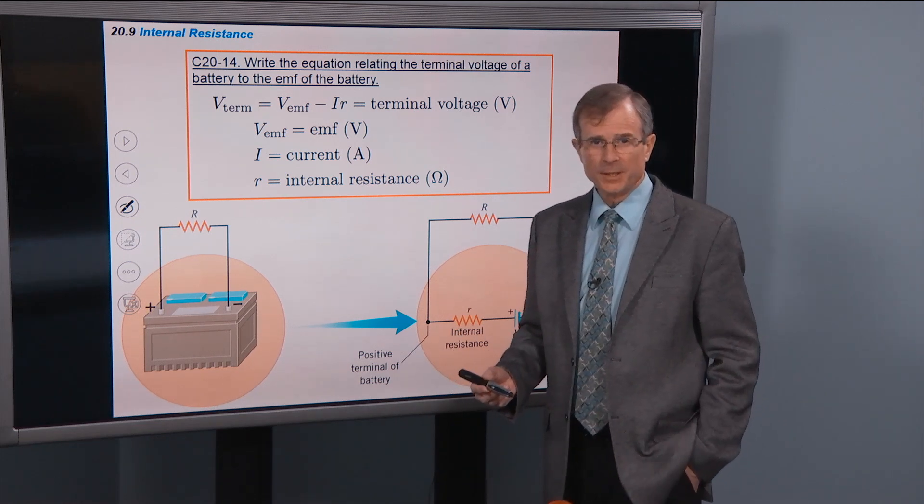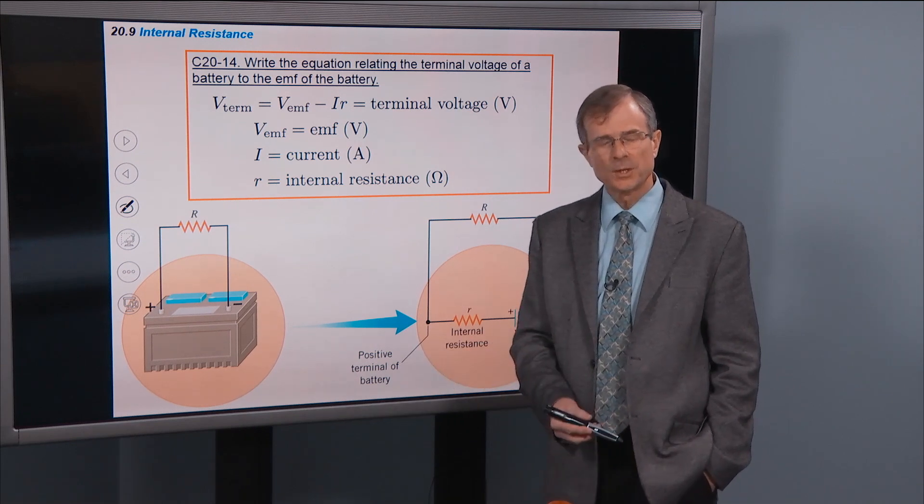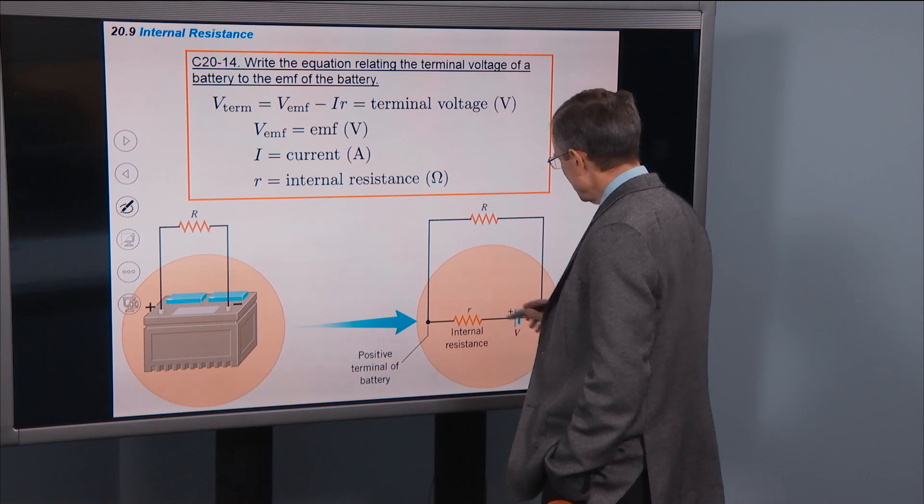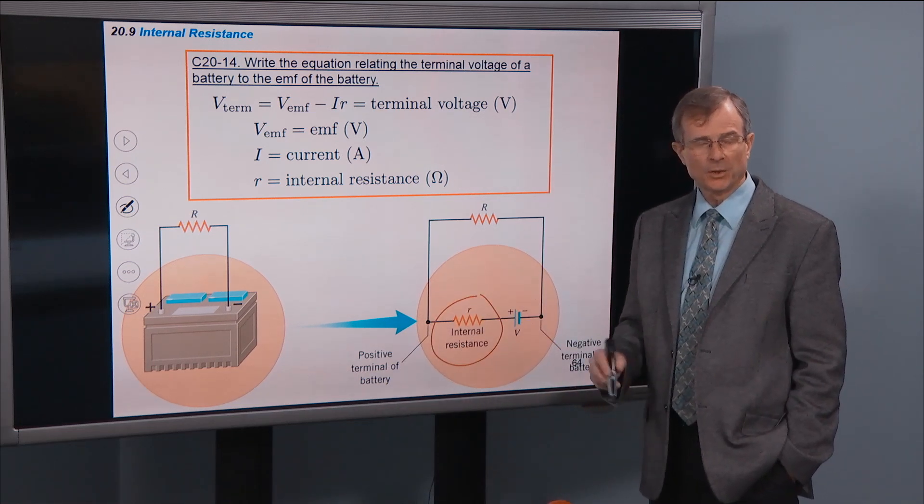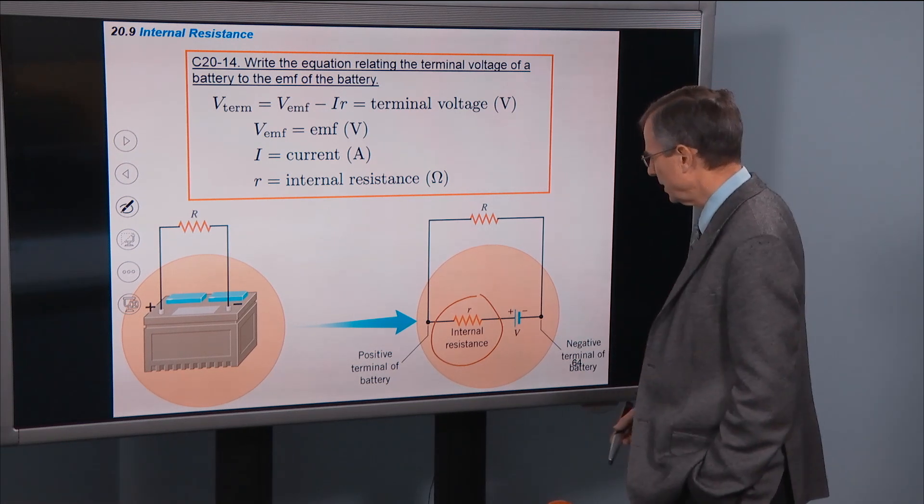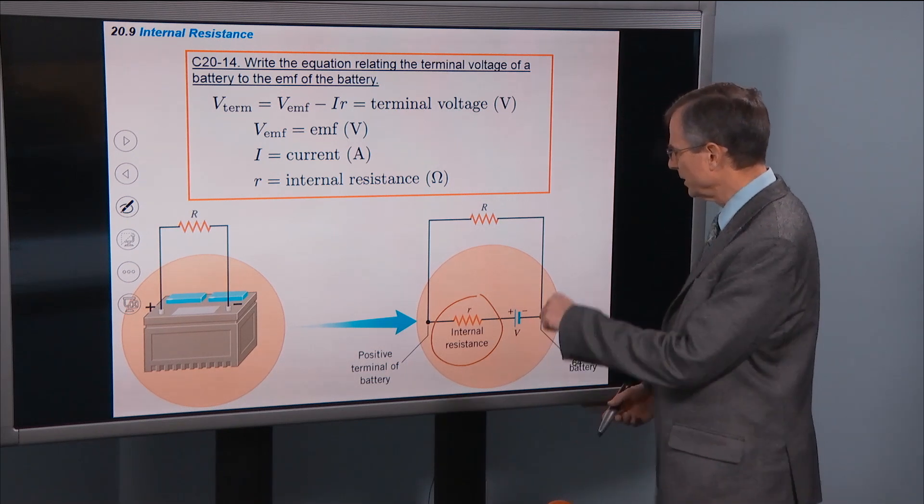So the dirty little secret is that batteries actually have some resistance to them when there's a current through them. And so we denote the internal resistance of a battery by a lowercase r. Instead of an uppercase R for a resistor, we just call it lowercase r. But it's still a resistance measured in ohms. It's called the internal resistance.